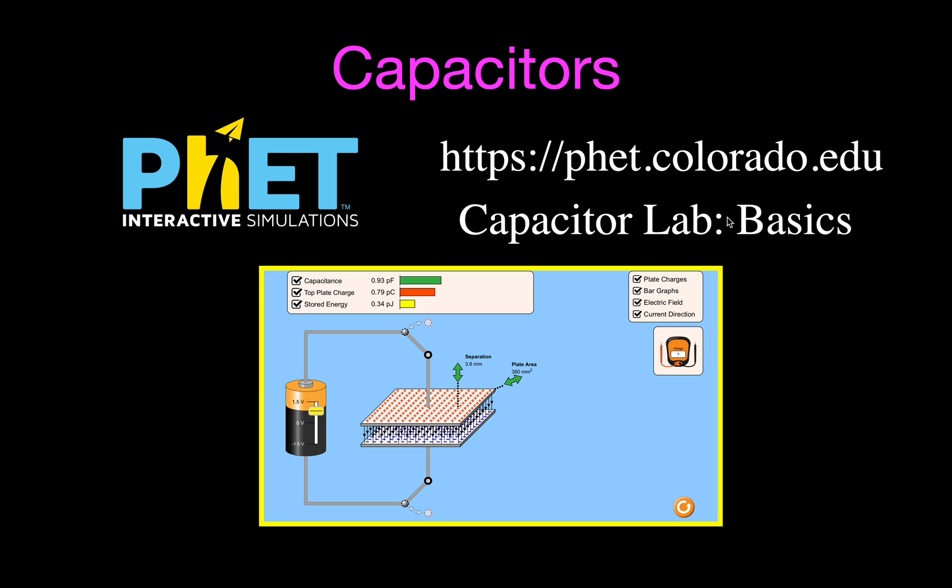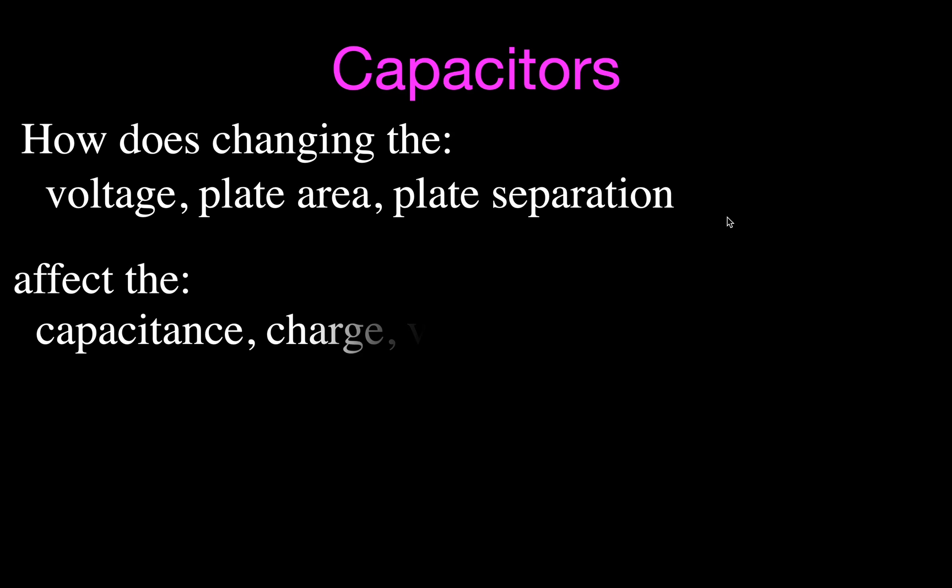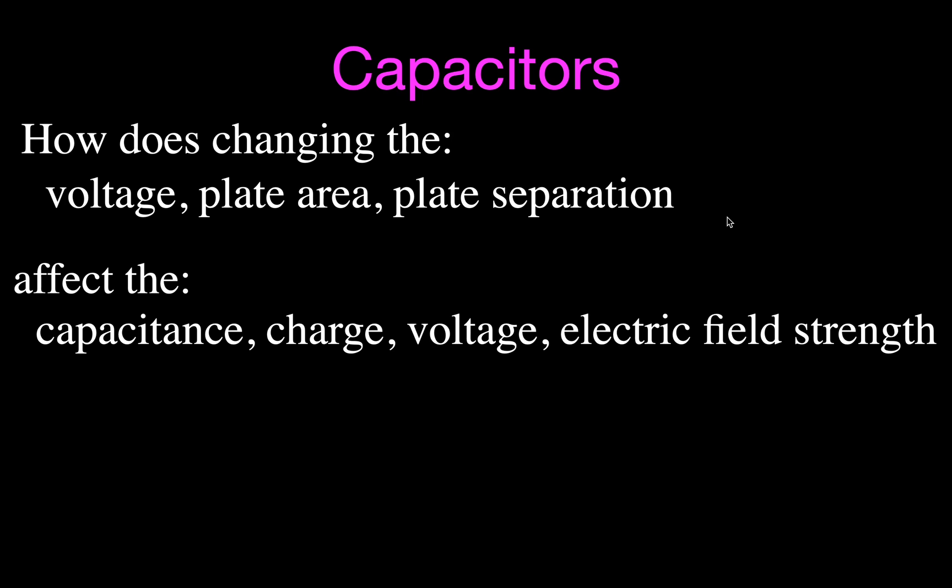It's an HTML5 simulation, so you can run it on all of your computers, tablets, and Chromebooks. In this video, we are going to be looking at how changing the voltage across the capacitor, the plate area, and the plate separation affects the capacitance, the amount of charge that can be stored, the voltage across the plates, and the electric field strength.